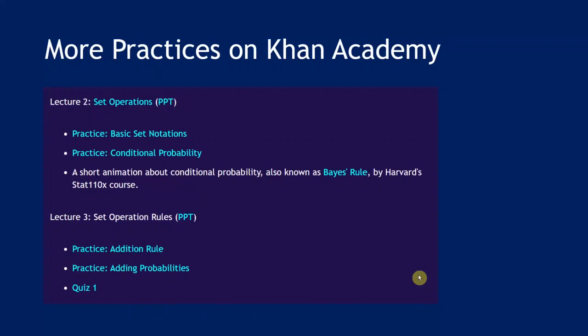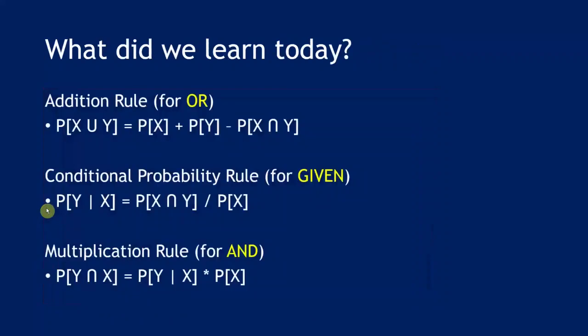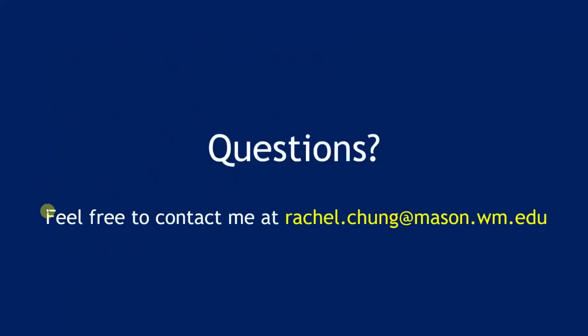For more practice with set operation rules, visit the course website for additional Khan Academy exercises, mostly on the addition rule, plus a short quiz. To recap: today we learned three rules — the addition rule, the conditional probability rule, and the multiplication rule. If you have any questions, feel free to contact me at rachel.chang@mason.wm.edu.